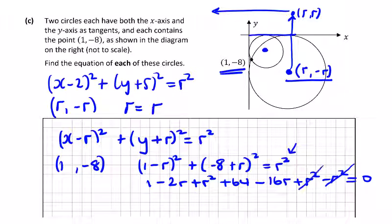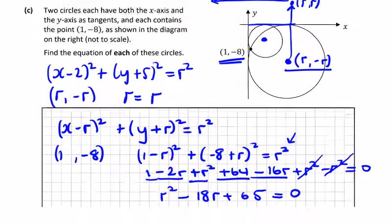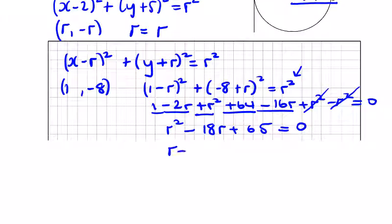These two cancel, so what am I left with? r squared minus 2r minus 16r is minus 18r, and then I have 64 and 1 is plus 65. I can see 13 and 5 straight away. 13 by 5 is 65, if you know your times tables from primary school, they do come in handy. r minus 5 equals 0.